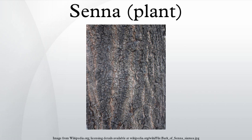What is now known as Senna was included by Linnaeus in his concept of Cassia in Species Plantarum in 1753. Philip Miller segregated Senna from Cassia in 1754 in the fourth edition of the Gardener's Dictionary. Until 1982, many authors, following Linnaeus, did not recognize Senna and Chamaecrista, but included them in a broadly circumscribed Cassia sensu lato. Phylogenetic analyses of DNA have shown that Chamaecrista, Cassia, and Senna are all monophyletic, but the relationships between these three genera have not been resolved; they are therefore shown in phylogenetic trees as a trichotomy.